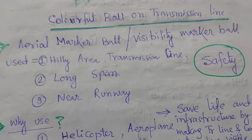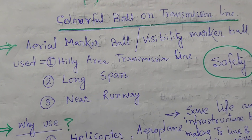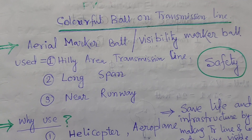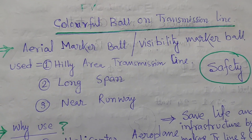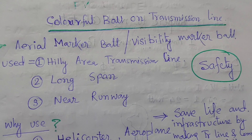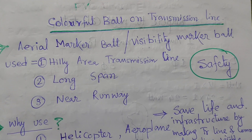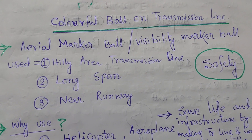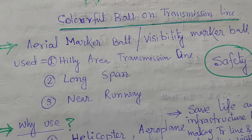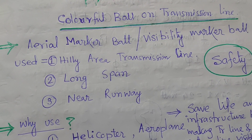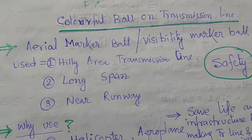Hi friend, how are you? If you have not subscribed to my channel, press the bell icon and subscribe for more information related to electrical engineering, substations, power plants, transmission lines, distribution lines, etc. Today our discussing topic is about colorful balls on transmission lines — why these colorful balls are used, what is the main reason for installation, and what are the functions of the lighting aerial marker ball, its advantages and disadvantages.